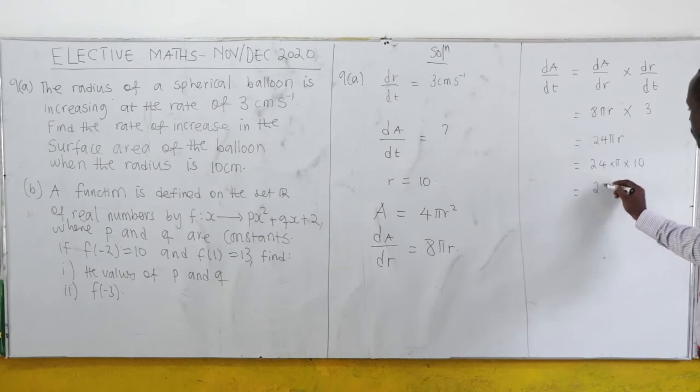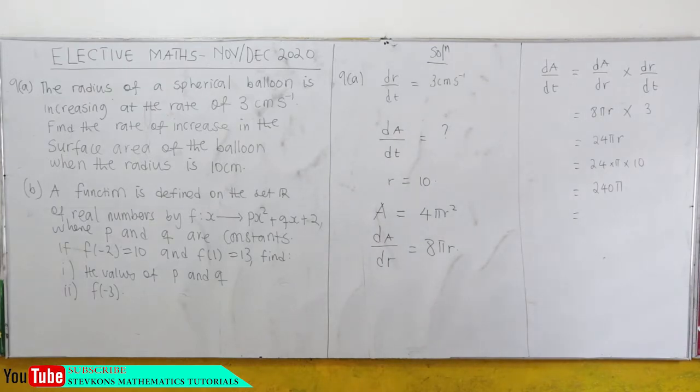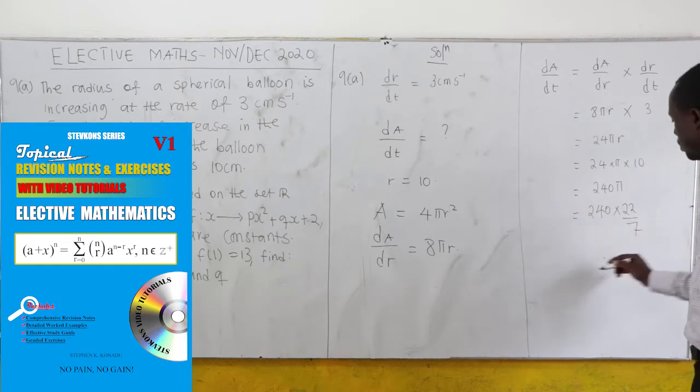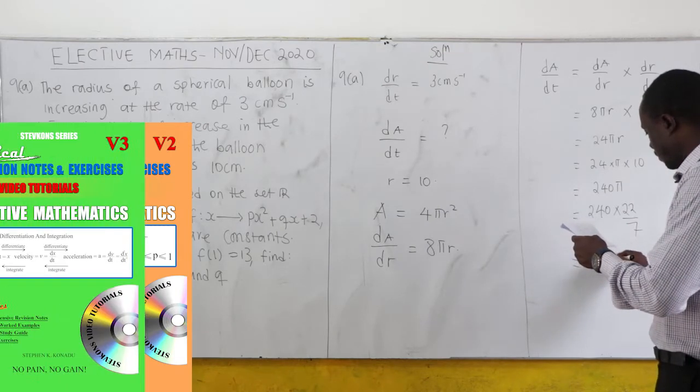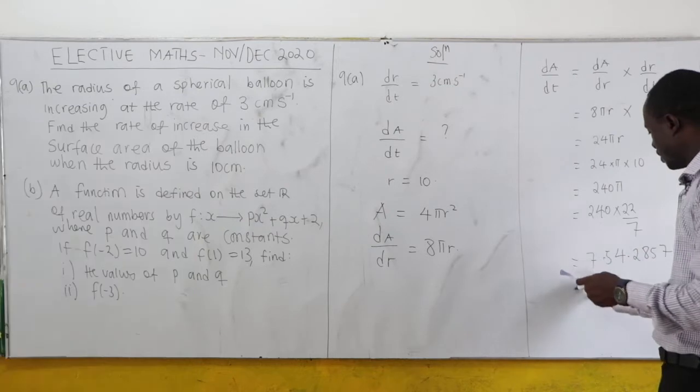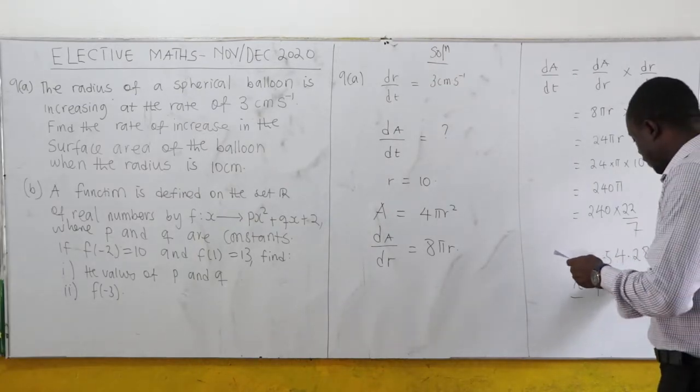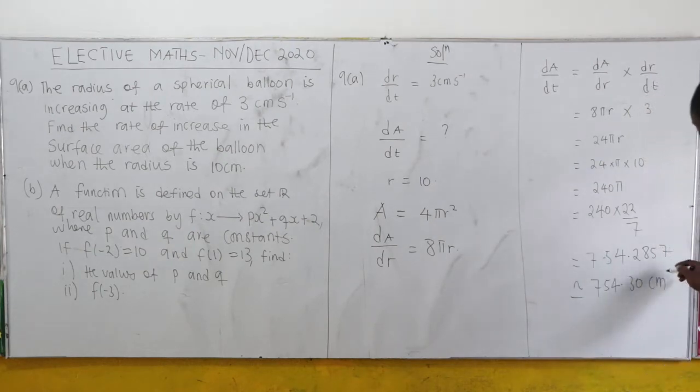Our r is 10, so that's 240π. This equals 240 times 22/7, which gives us 754.2857, approximately 754.30 cm² per second.